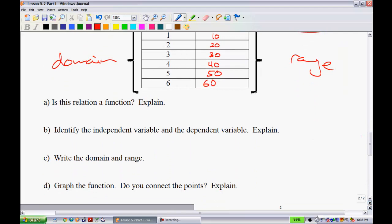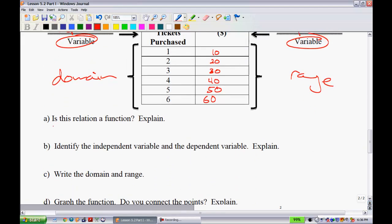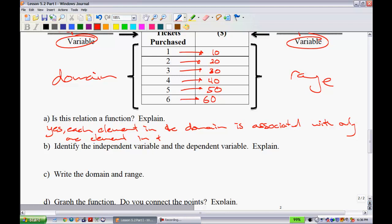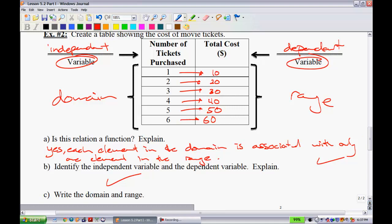Now they ask a couple questions about this. Is this relation a function? Well, I would say yes. Now why would we say yes? Notice that each term in this set maps onto directly one in the other set. So we would say each element in the domain, domain being your left set right there, is associated with only one element in the range. If that ever happens, then you know you're good to go as far as functions go. Identify the independent and dependent variables. We did that. We're good to go. Now explain why. I explain because basically the total cost depends on the total number of tickets, so that's why the total cost is your dependent and the number of tickets purchased is your independent.